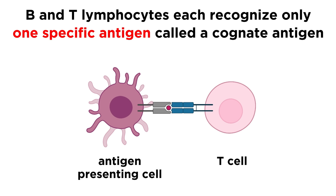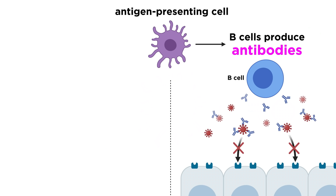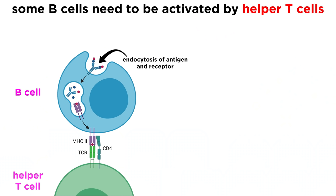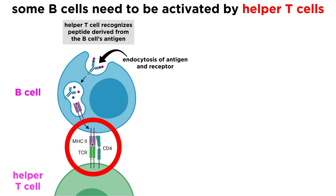B and T lymphocytes are unique in that each lymphocyte recognizes one and only one specific antigen. This specific antigen is called the lymphocyte's cognate antigen. Remember that B cells produce antibodies that can neutralize infectious microbes, while T cells recognize and kill infected or cancerous self-cells. T cells can only recognize their cognate antigen when they are bound to surface proteins on other cells, in a process called antigen presentation. Although B cells can recognize their cognate antigens without help from other cells, many B cells need help from T cells to become fully activated.